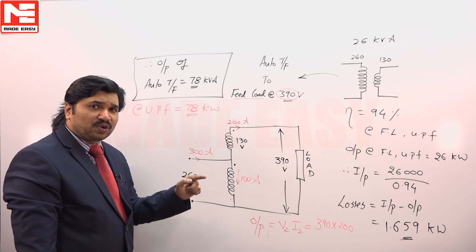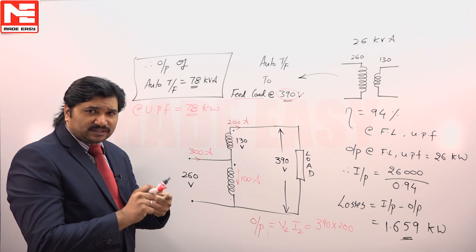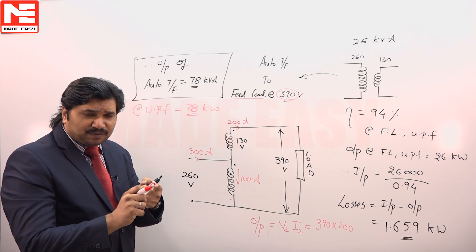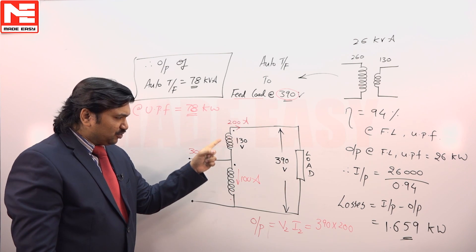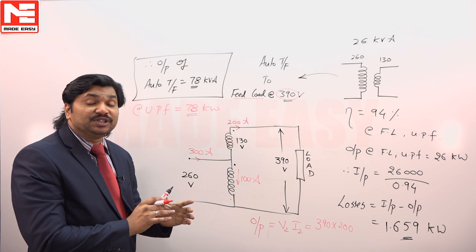Through this how much flows? 100 amperes only. See the logic - auto transformer without changing the current and voltage ratings. Already in a transformer losses are iron losses and copper losses. Iron losses depend on voltage, copper losses depend on current. There is no change in the voltage rating, there is no change in the current rating.